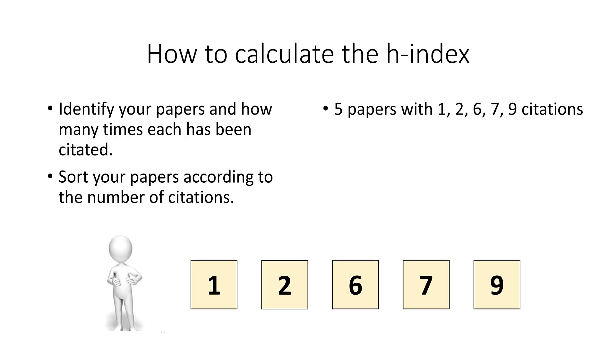These five papers have been cited one, two, six, seven, and nine times, respectively. The H-Index in this example is three, so let us see how this was calculated.